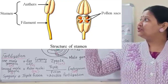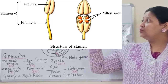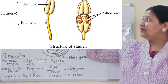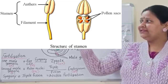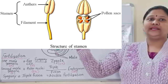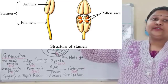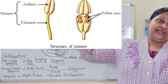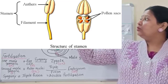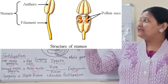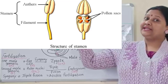The third whorl is androecium and it comprises the stamen. Stamen is the male part. Now look at the structure of stamen — it has two parts: the upper one is the anther, the lobed one, and the lower one is the filament. The anther produces pollen grains.